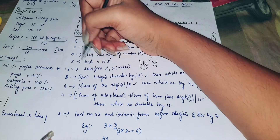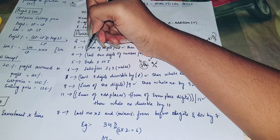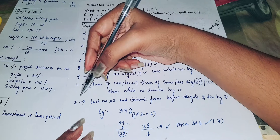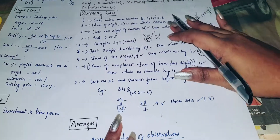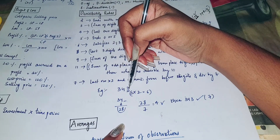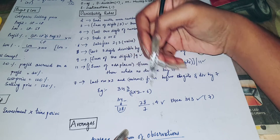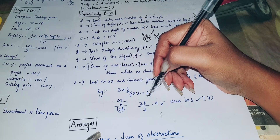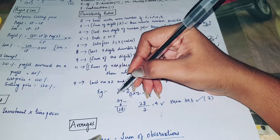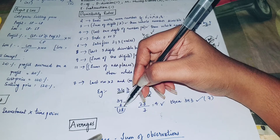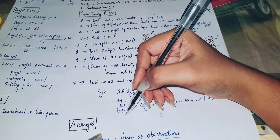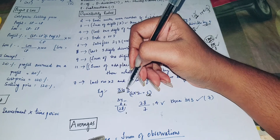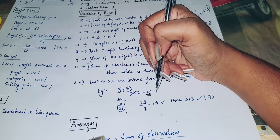Divisibility rule of 10: a number which has a 0 at the end is divisible by 10. Next, divisibility rule of 7: take the last digit, multiply it by 2. For example, I have 343. The last digit is 3, multiplied by 2 gives 6.